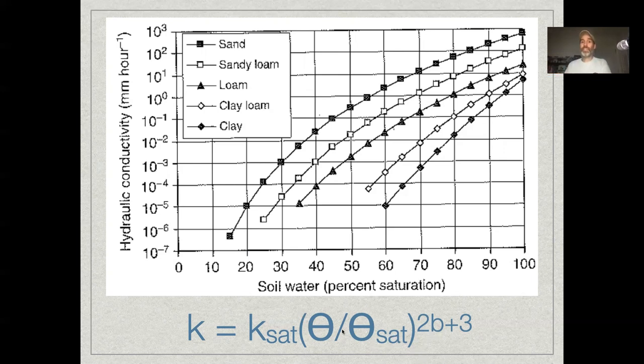And in this case, it turns out the exponent that modifies conductivity is linearly related to the exponent that modifies matrix potential because they're both controlled by these pore spaces. And so it's the same b, but now it's 2b plus 3. And why it's 2b plus 3? You'd have to take the hydrology course. We've got one of those. You can go into that derivation. It's not something I want to cover today.